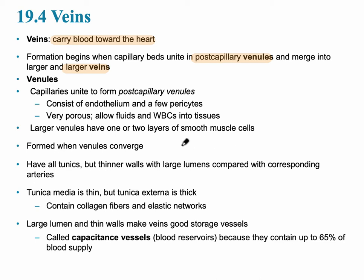Larger venules have one or two layers of smooth muscle, but this is a key difference between veins and arteries. Veins have very little smooth muscle in the tunica media, whereas arteries have a significant amount. Veins are referred to as capacitance vessels, meaning that at any one time the large majority of our blood — normally five to six liters — is found in the veins. They are the blood reservoirs.